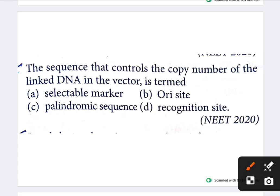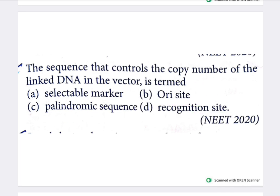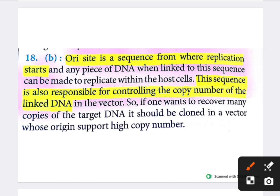Next question: the sequence that controls the copy number of linked DNA in the vector is termed what? Options are selectable marker, ORI site, palindromic sequence, and recognition site. The answer is ORI site. The origin of replication (ORI) is a sequence from where replication starts and is responsible for controlling the copy number of the linked DNA.